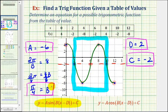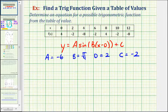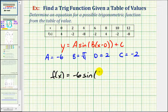Now that we have the values of A, B, D, and C, we can write the equation of our function. The equation of our function using sine would be f of x equals negative six times sine of pi over four times the quantity x minus two minus two.